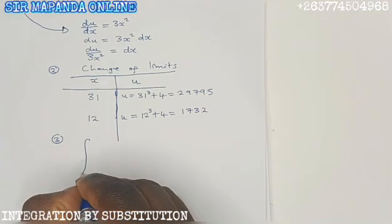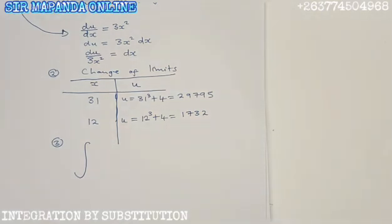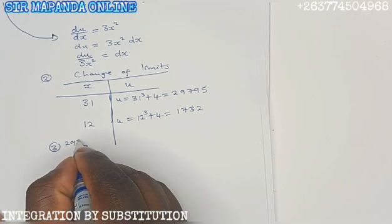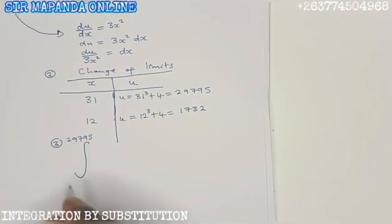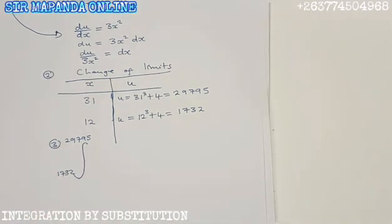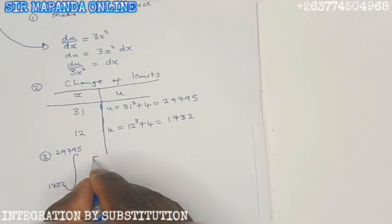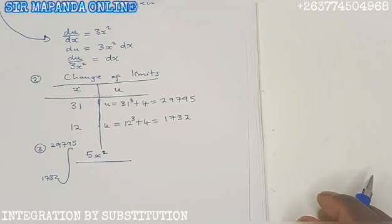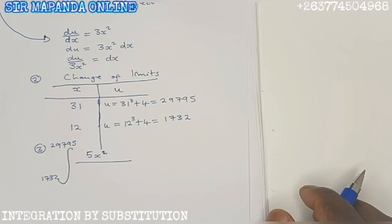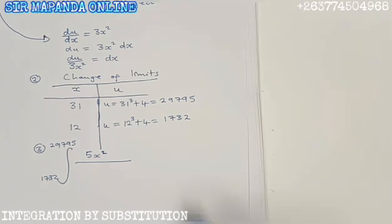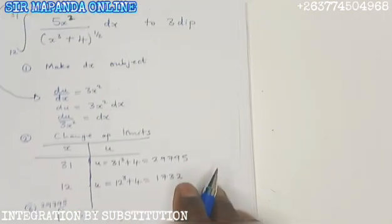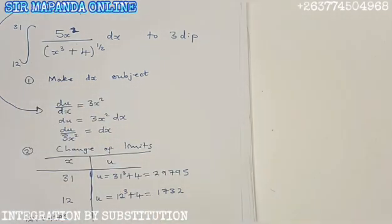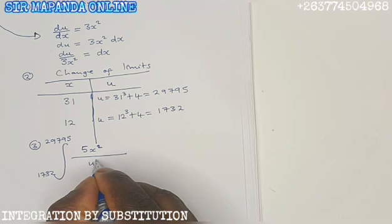We start by swapping the x limits with the new u limits. We are now putting 29,795, then on 12 you put 1732, which is the new lower limit. Here you have 5x squared. You leave it like that. It is going to cancel off with the dx which was made the subject. You are given x cubed plus 4, where x cubed plus 4 is the u. So it means your denominator is going to become u to the power of half. You write u to the power of half.